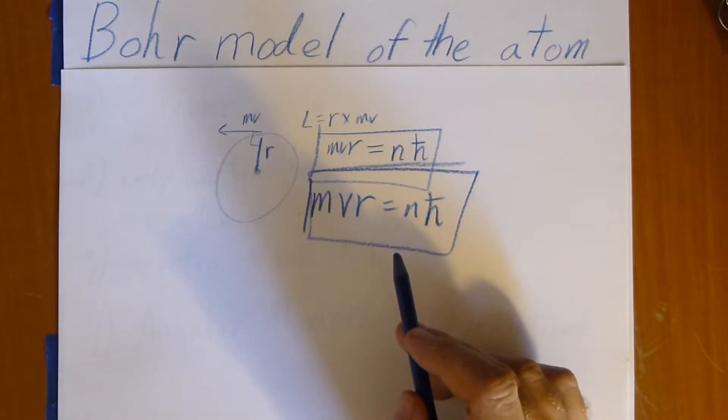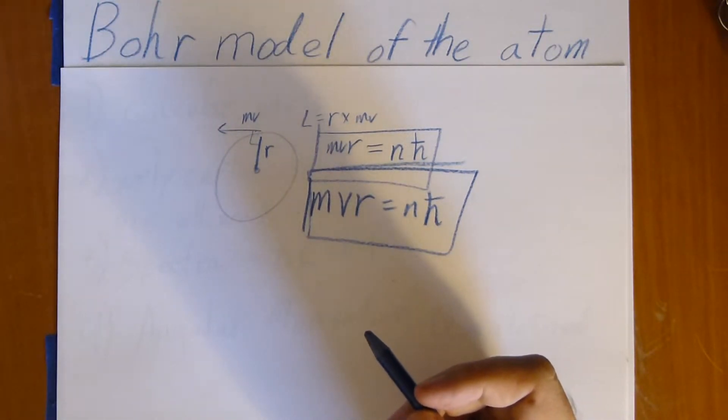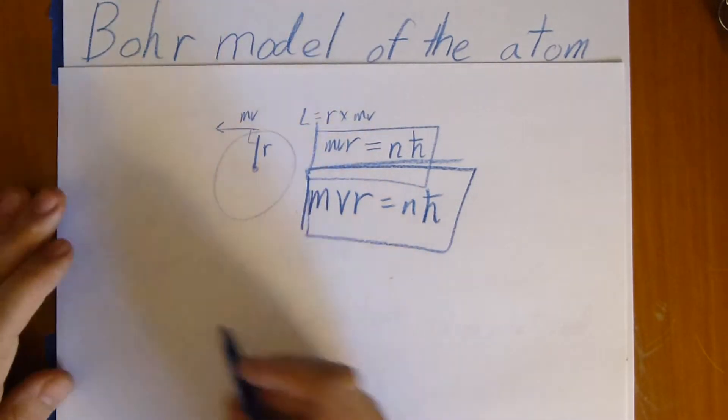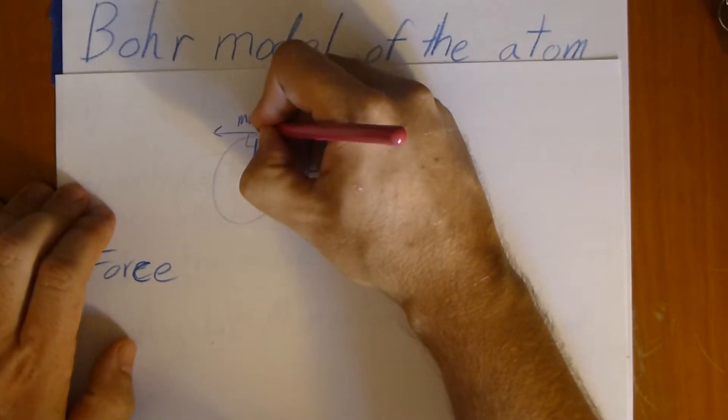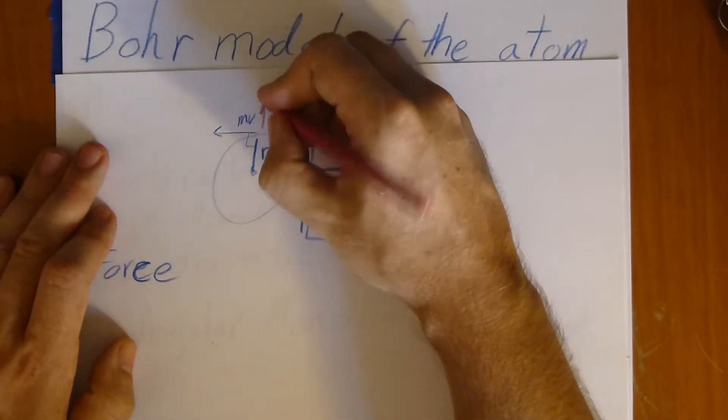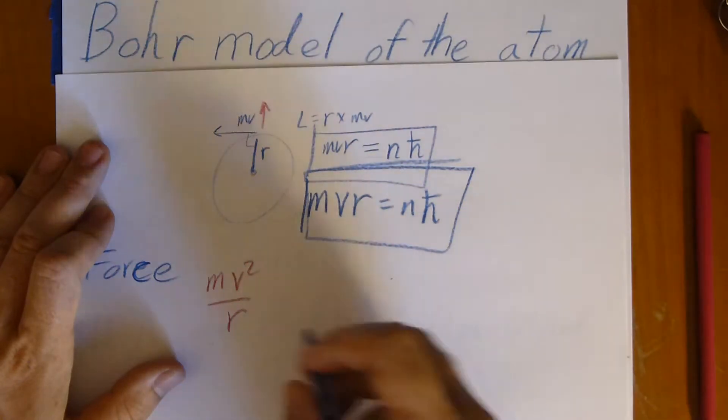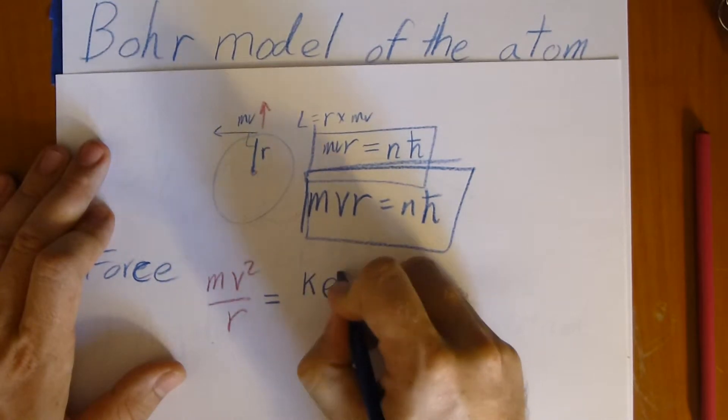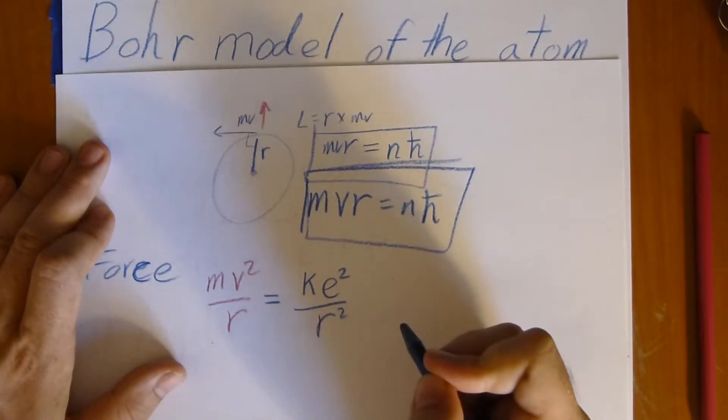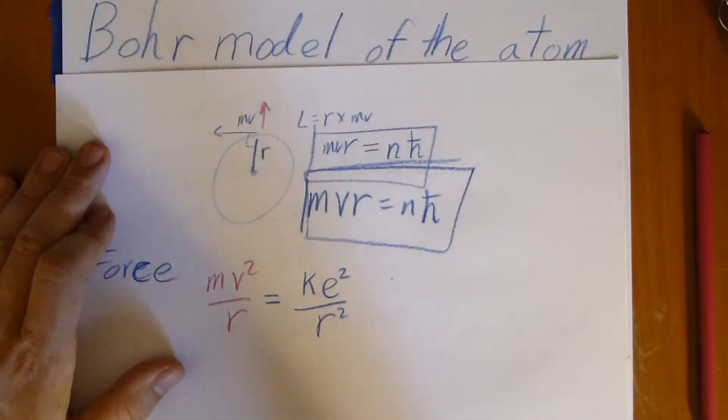We're also going to use the formula for force. Note that the force right here, we have the outward so-called centrifugal force, that's going to be MV squared over R. And we'll have the inward electrostatic force of K E squared over R squared. We're going to solve for the radius, so-called, well, the radius at its lowest level, the so-called Bohr radius.